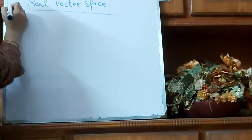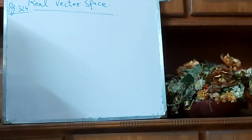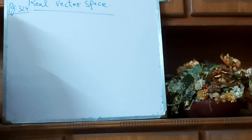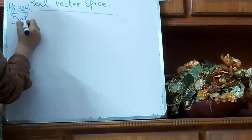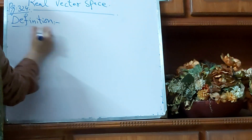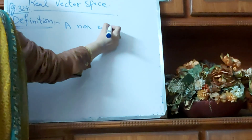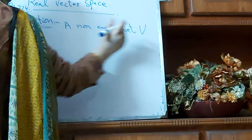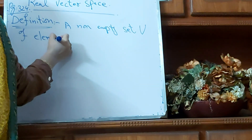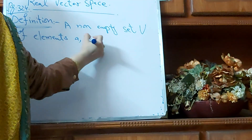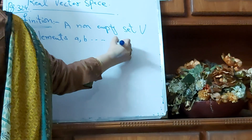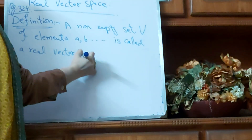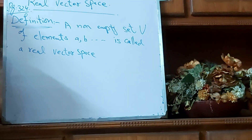Page number 324, in Advanced Engineering Mathematics by Kreyszig — the eighth and ninth editions are the same. First I will write the definition. A non-empty set, say capital V, of elements — for example A, B, and so on — is called a Real Vector Space, also called a Real Linear Space.